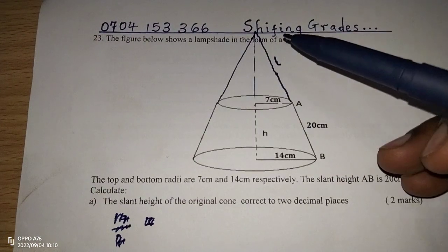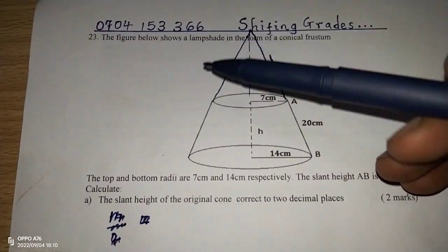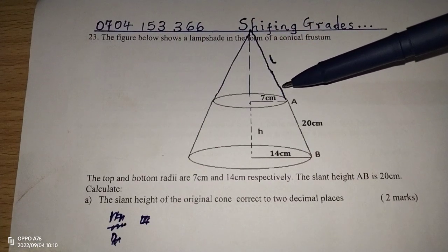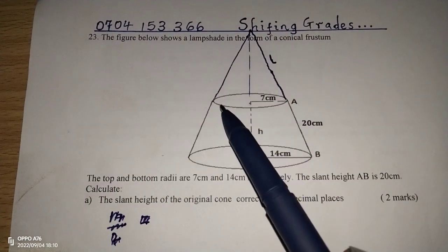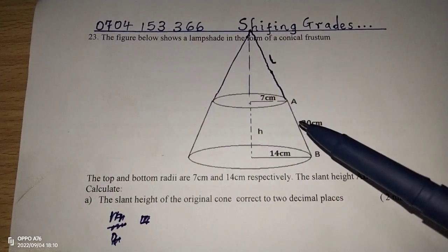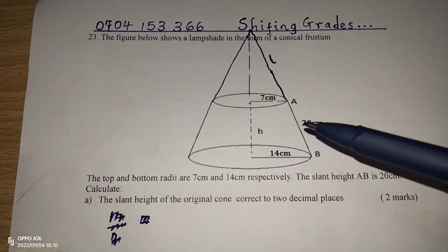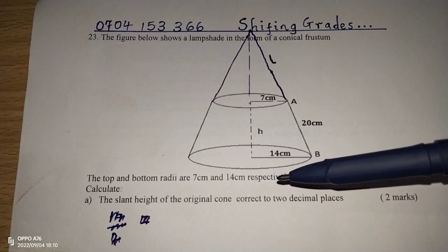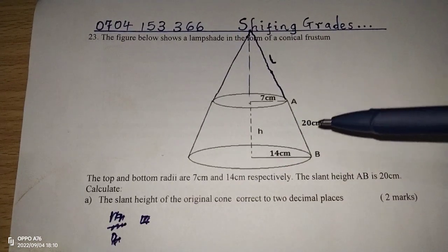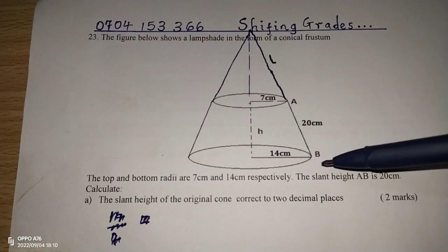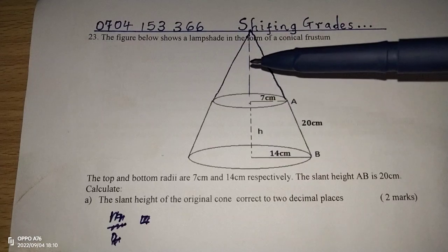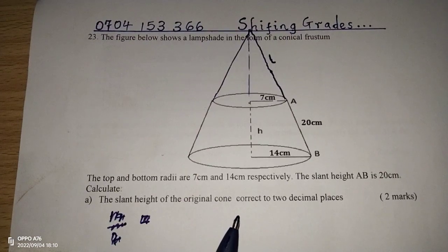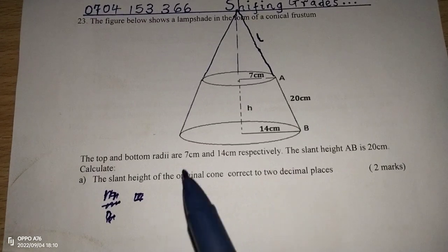The first thing we do here is apply similarity and enlargement. There is an original cone, and we extended this frustum to get an overview of the original cone that was cut away. A smaller cone was cut at a plane parallel to the base, so the smaller cone which was cut away is similar to the original cone. Therefore we can relate dimensions — radius to radius, slant height to slant height, and vertical height to vertical height — using similarity and enlargement.